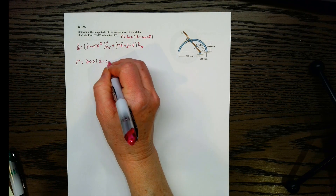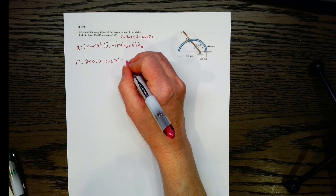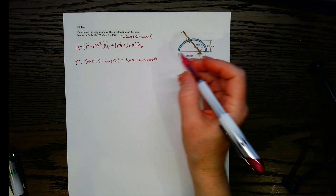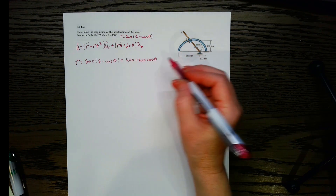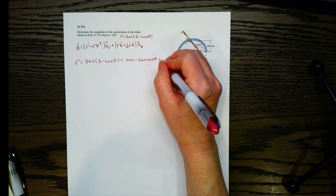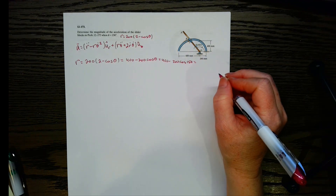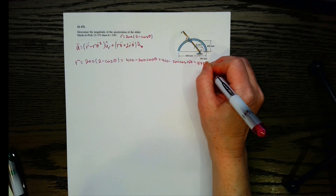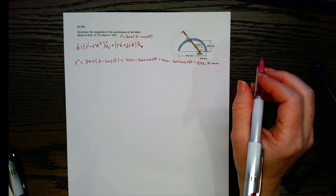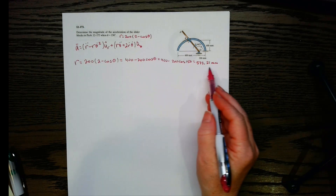R equals 200 times the quantity 2 minus cosine theta, which was given. Expanding, that's 400 minus 200 cosine theta. At 150 degrees, that's 400 minus 200 cosine 150, which equals 573.21 millimeters.